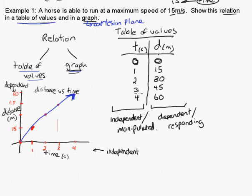What we did is we did both of those methods here. We had a table of values showing that we had the horse running at a maximum speed of 15 meters per second. We filled in a table of values, then converted that table of values over into a graph here, or a Cartesian plane. We graphed each of the points and created a line of best fit. That should have been a straight line, but I don't have a straight line feature on here.